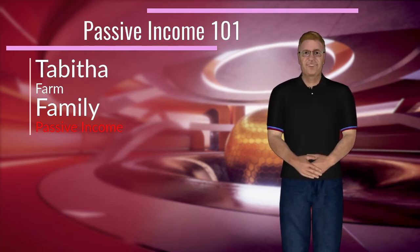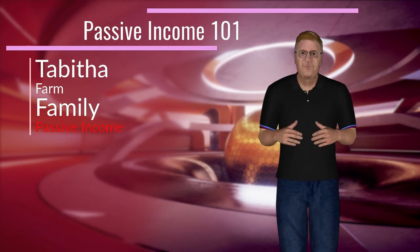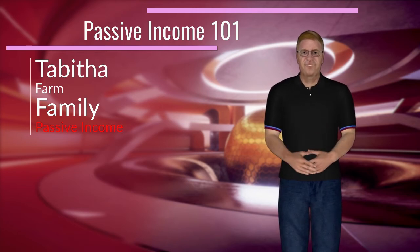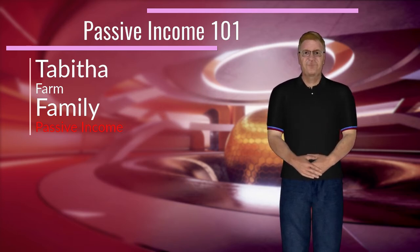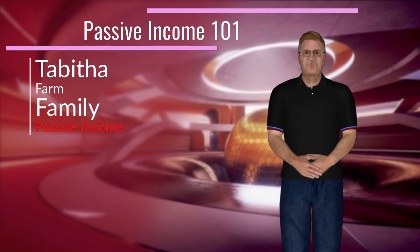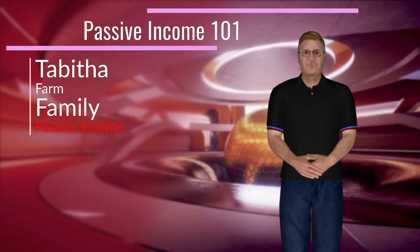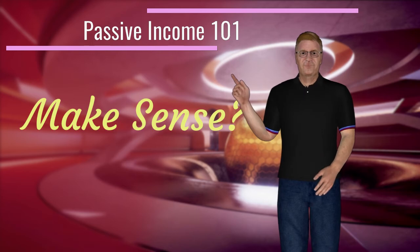Year after year as Tabitha grew older, the children took on more responsibilities and increased the income and quality of life for Tabitha. Thus, at the moment in her life when Tabitha was ready, her previous efforts and working family members would earn her an income that does not require her active participation — only leadership and love — while maintaining her livelihood and quality of life. Make sense?